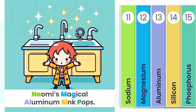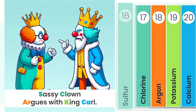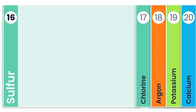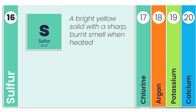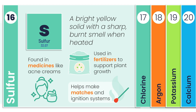That's 15 elements decoded and the mission is heating up. To remember elements 16 to 20, try this: sassy clown argues with King Carl. Each word's bold letter stands for an element: sulfur, chlorine, argon, potassium with the symbol K, and calcium. Let's start with sulfur — it's bright yellow, distinct in smell, and plays a key role in both nature and industry. You'll find it in medicines, supporting healthy plant growth, and helping spark matches and ignition systems.